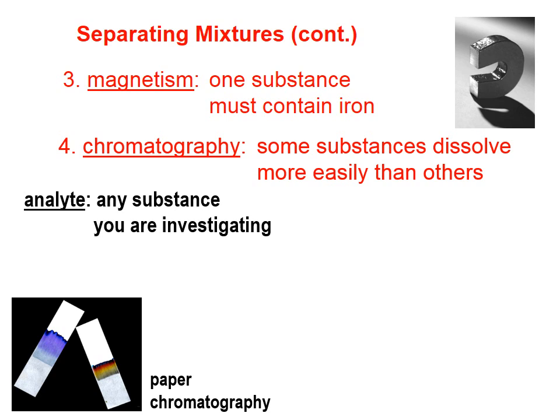An analyte is a general term for any substance that we're investigating. In paper chromatography, you can see here in the picture on the right, we've got overhead marker ink that we are separating into its various colors. Black overhead marker ink is a mixture — it's a little hard to see here, but there's definitely some yellow in there, looks like some red, and looks like some blue.